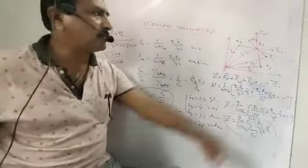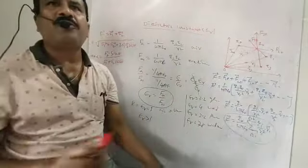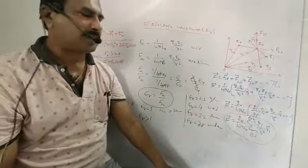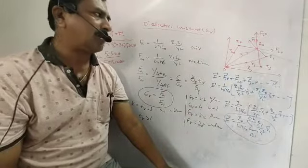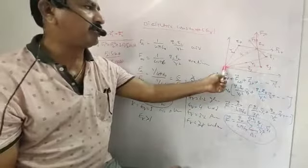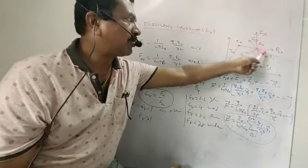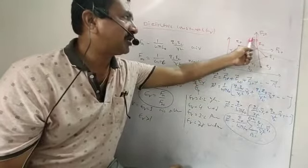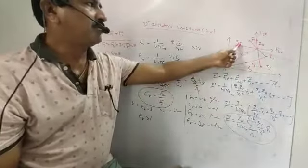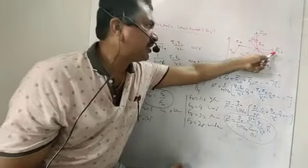Consider a group of charges. In this system, electrostatic forces act on a target charge. Here Q1, Q2, Q3 are the charges. Q0 is the test charge, and Q1 is at distance R1 from the origin. Q2 charge is at distance R20 from the origin, and the force on Q0 is F20.